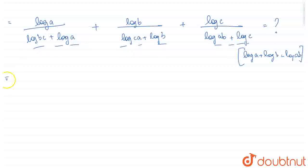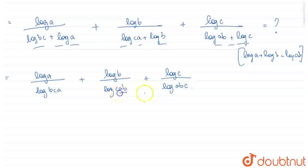So let's apply it here. In the denominator the same thing is happening, so I've applied it. Our answer becomes log a upon log bca plus log b upon log cab plus log c upon log abc.